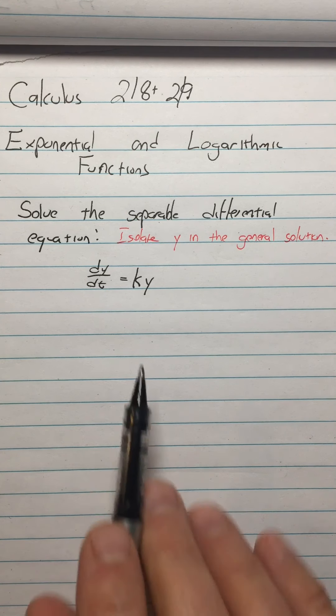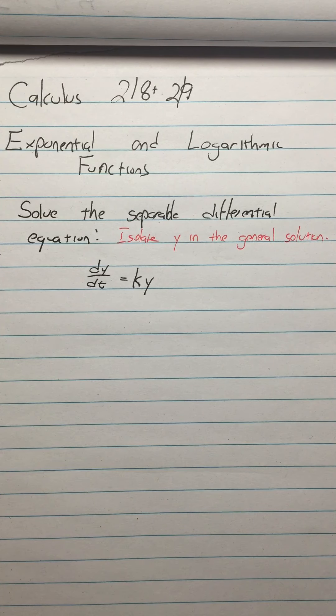So to start with, here's a separable differential equation. K is a constant. Y is the dependent variable, and T is the independent variable, so Y depends on probably time.